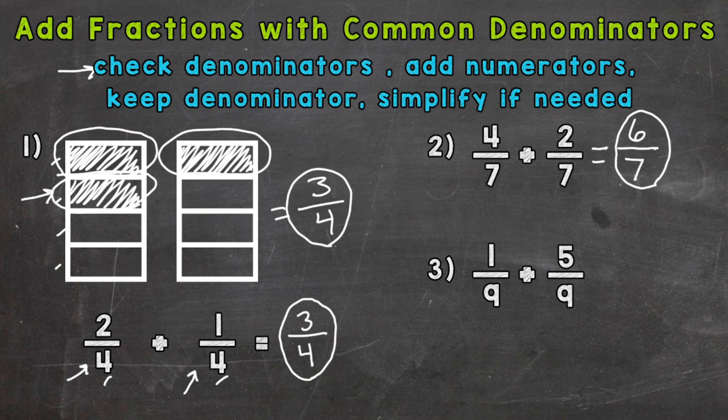Now for number three let's check our denominators. They are common. We have a common denominator of nine. So now we can add our numerators. One plus five is six. Keep our denominator of nine the same and then simplify if needed. Now six and nine have a common factor of three. So we can divide both our numerator and denominator by three to break this fraction down into its simplest form. So divide by three, divide by three, and we get two-thirds. Now when you simplify it's still an equivalent fraction because we did the same thing to the numerator and denominator. We just broke it down to its simplest terms. And again if you need help with that I dropped that video link down in the description.